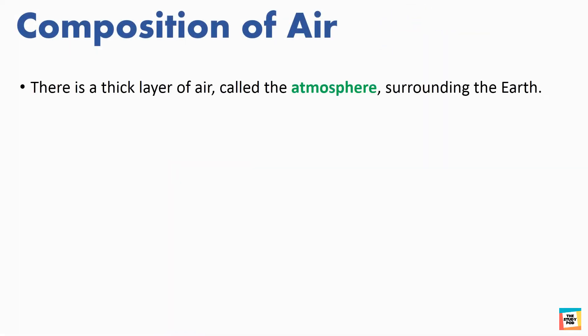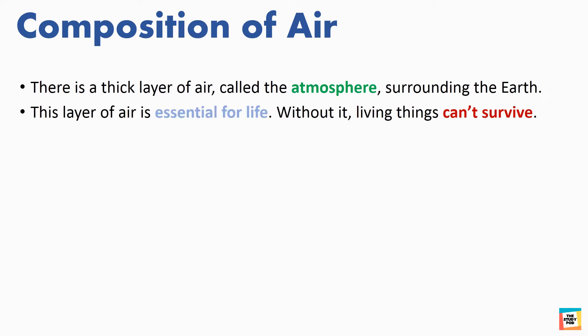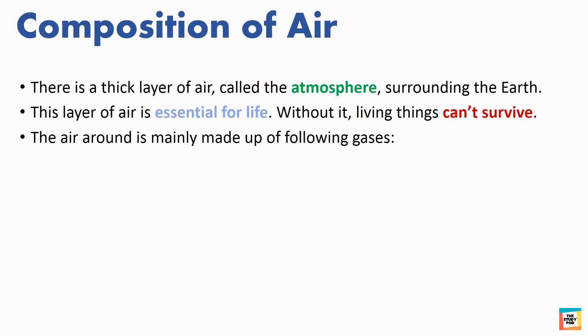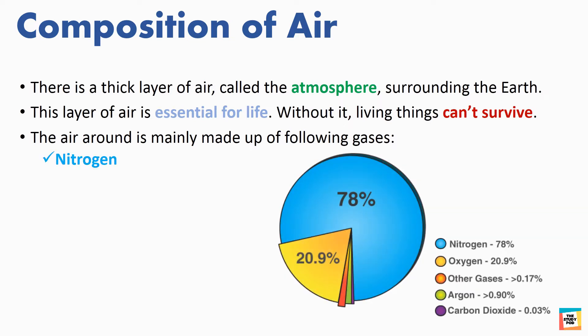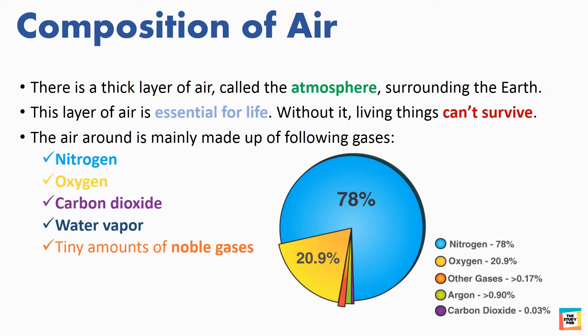There is a thick layer of air, called the atmosphere, surrounding the earth. This layer of air is essential for life. Without it, living things can't survive. The air around us is mainly made up of nitrogen, oxygen, carbon dioxide, water vapor, and tiny amounts of noble gases.